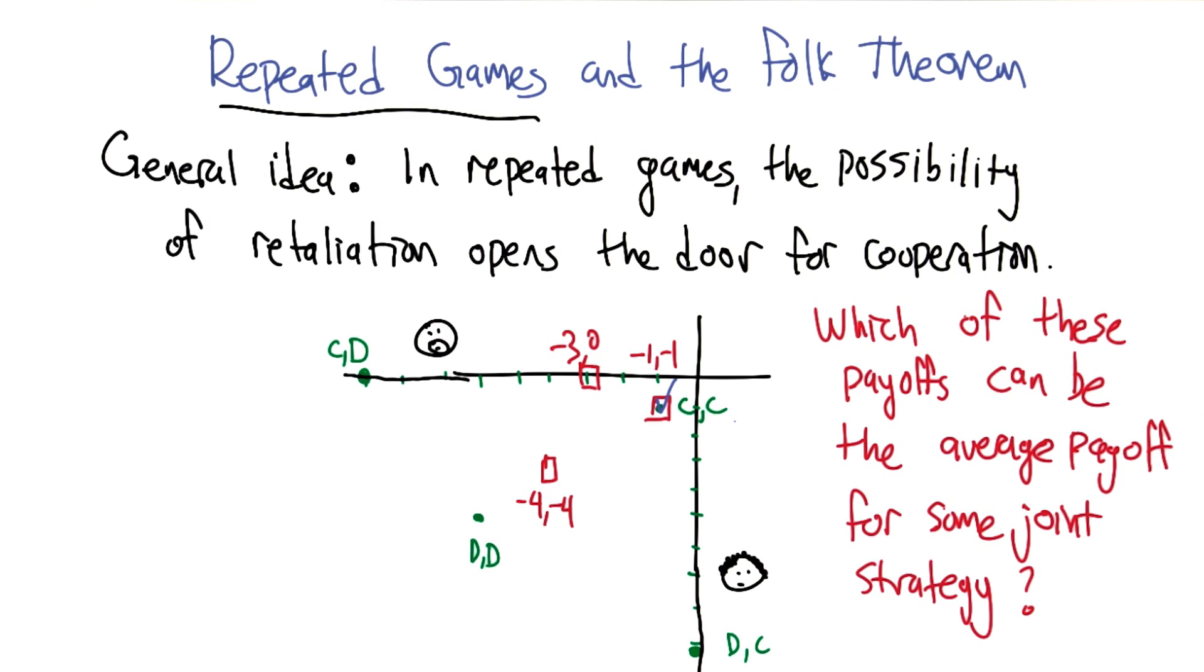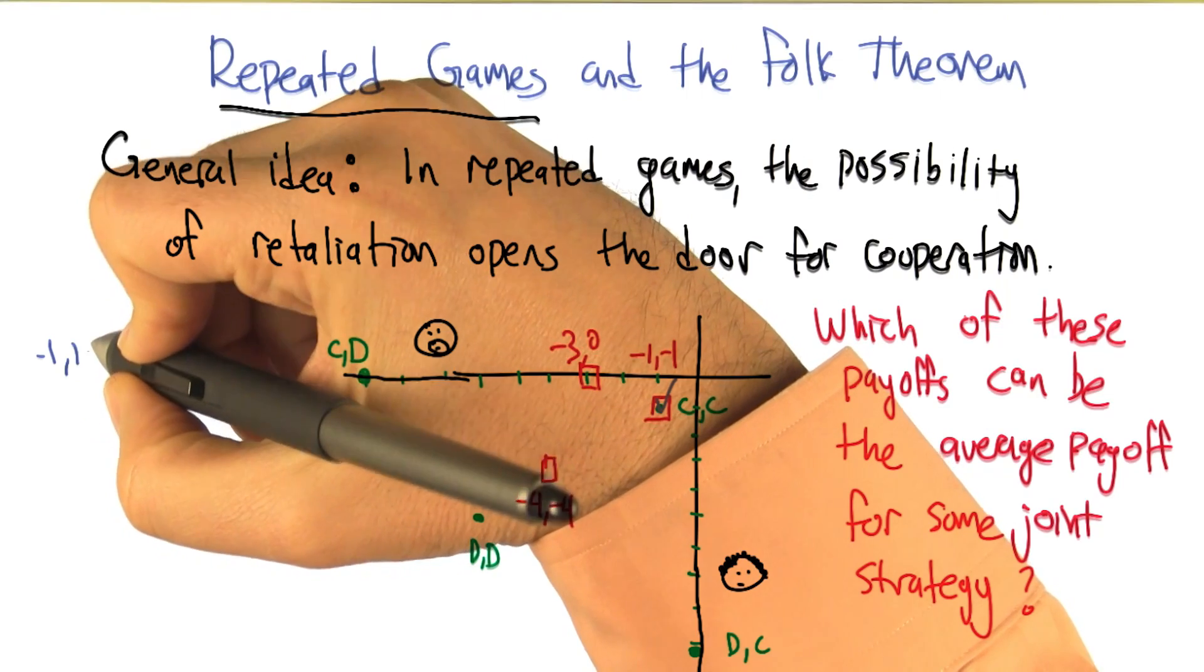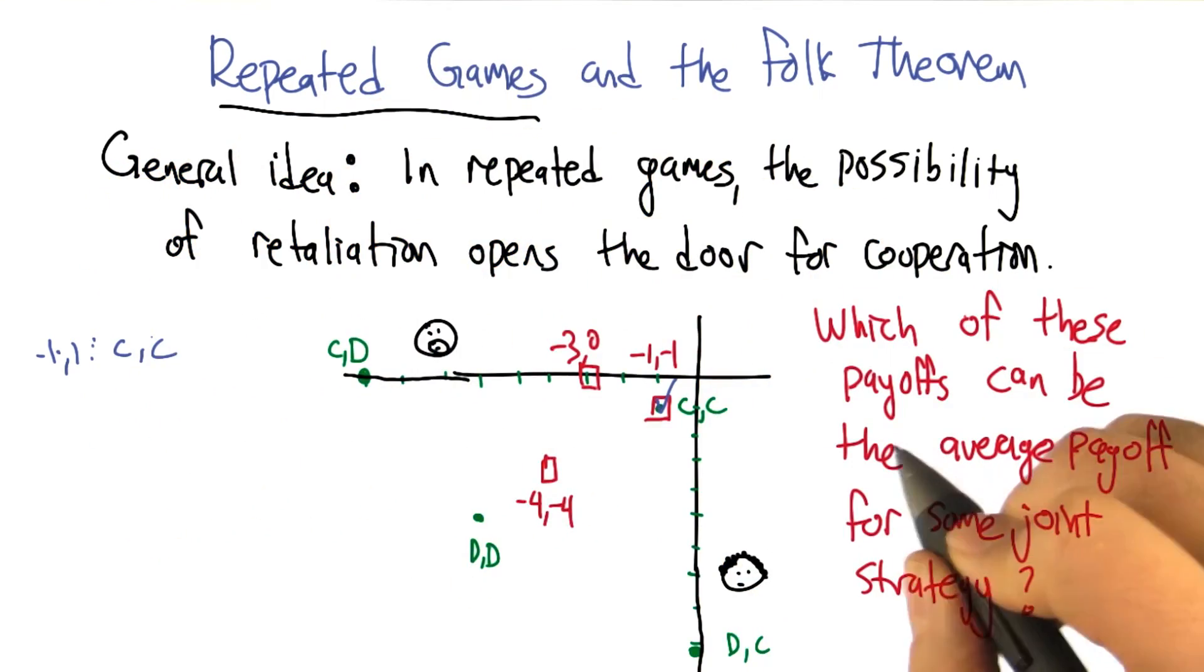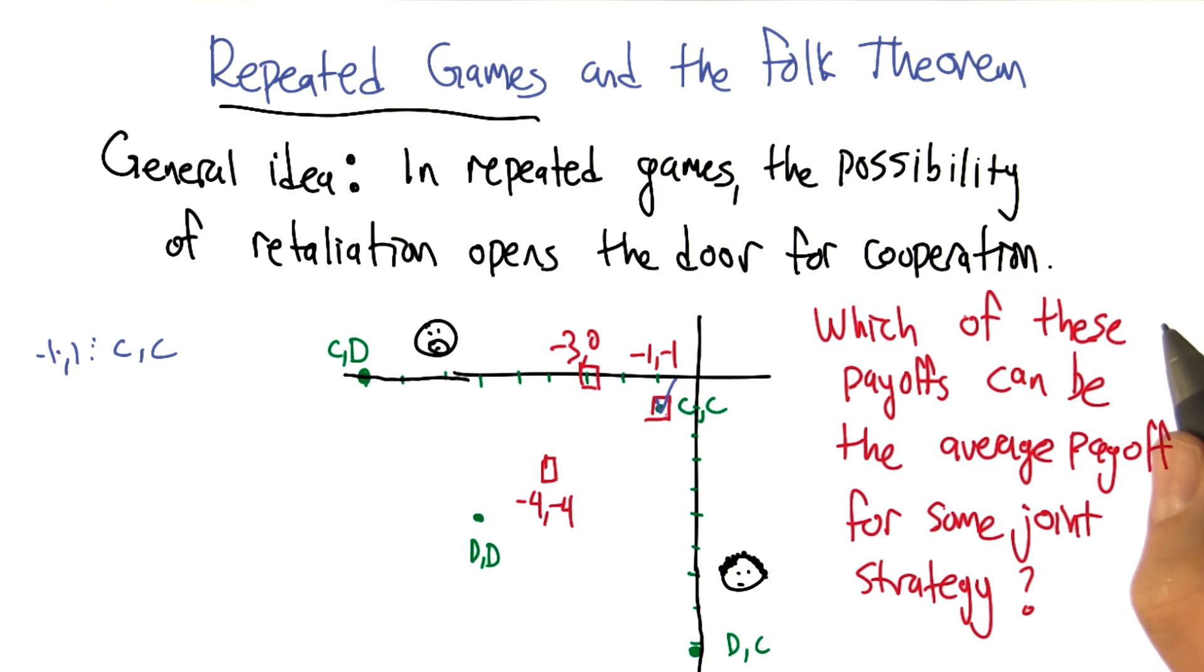Because that's one of the points. So the joint strategy to get the minus one, minus one would be for both players to cooperate, right? Again, they're just willing to do that just for the sake of showing that they can make that value.